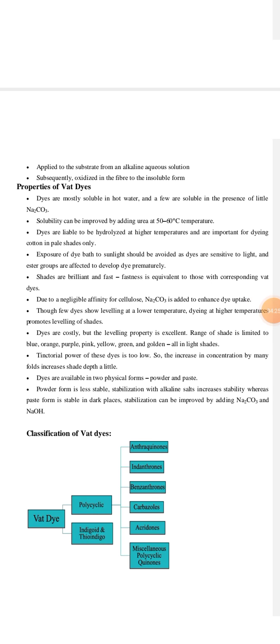Due to negligible affinity for cellulose, sodium carbonate is added to enhance dye uptake. Though few dyes show leveling at lower temperature, dyeing at higher temperature promotes leveling of shades. Leveling means making the dye shade even on the fabric. They are costly, but the leveling property is excellent and their range of shade is limited, which is limited to blue, orange, purple, pink, yellow, green and golden, all in light shades. Their tinctorial power is too low. Tinctorial power means their relative ability to impart color value. These dyes are available in only two forms, either powder form or paste form. Their powder form is less stable and their paste form is more stable.